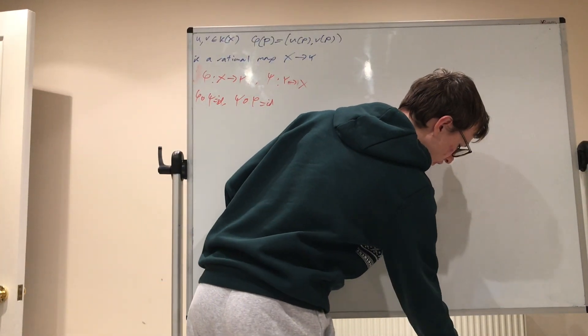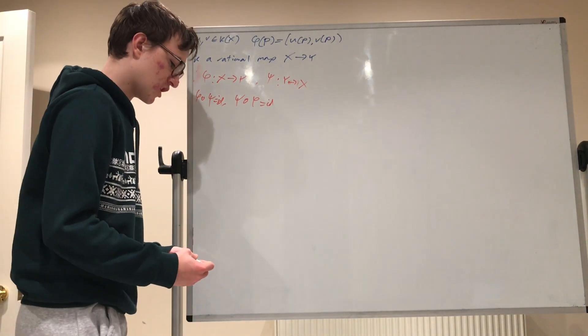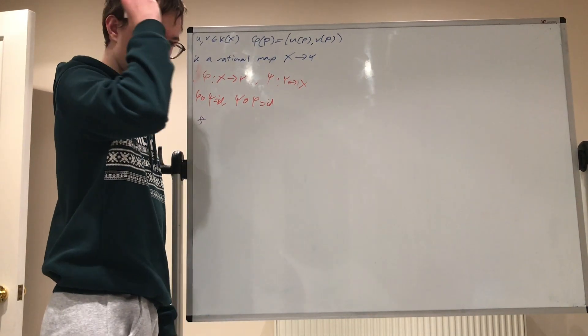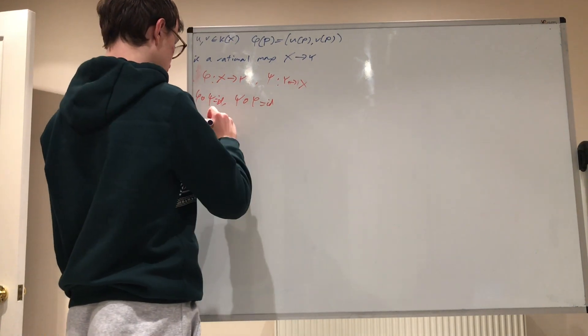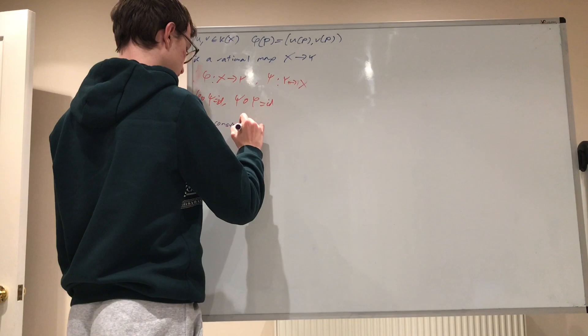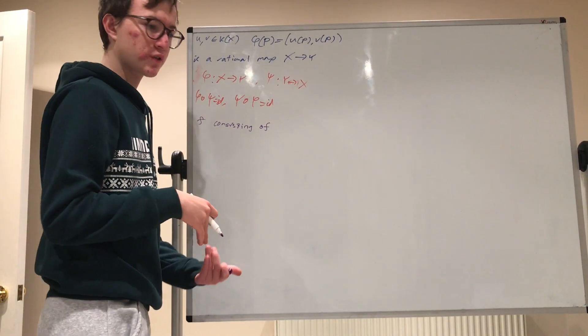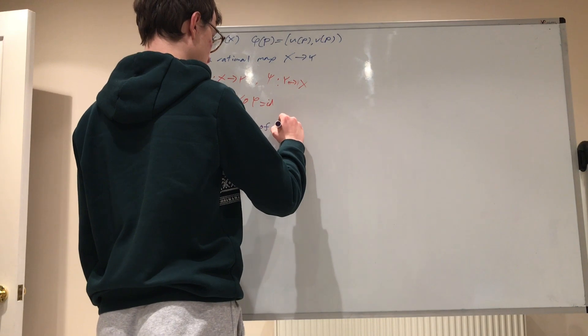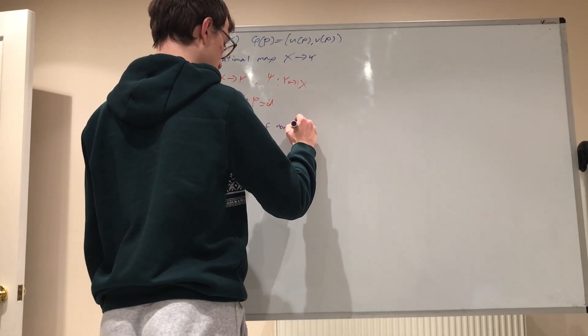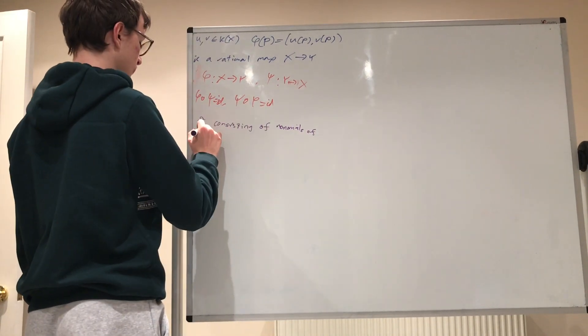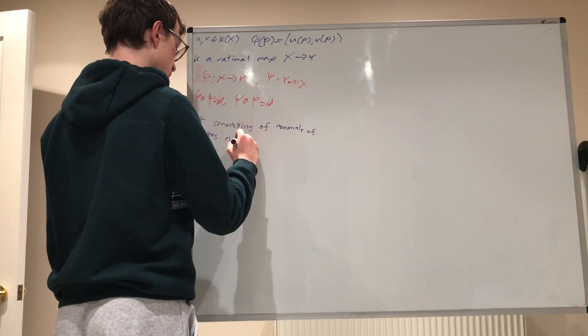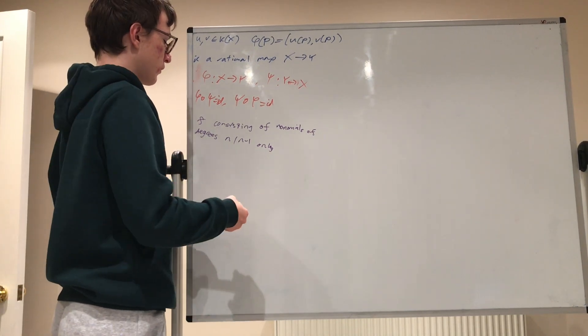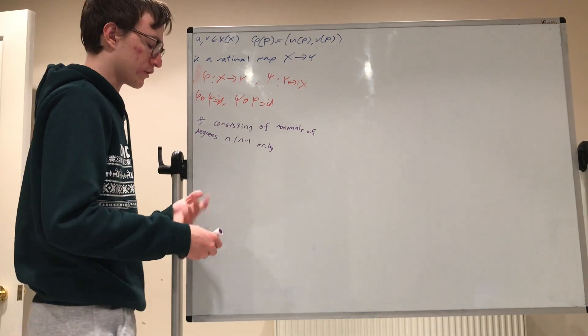And so, we can generalise work that we did in the last video to show that a curve f consisting of monomials of degrees n minus 1 and n of x of y, and n minus 1 only, then by again generalising what we did last time, we can show that this is birationally equivalent to a line.